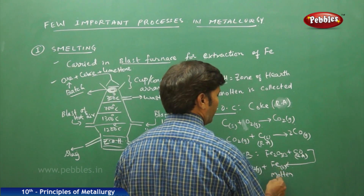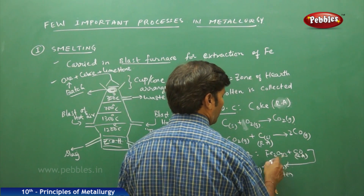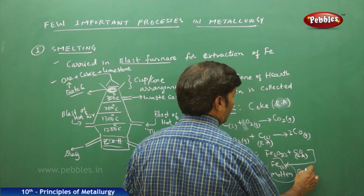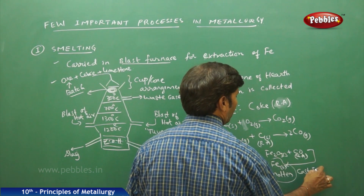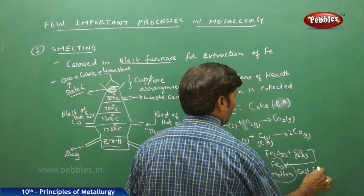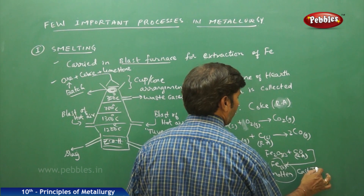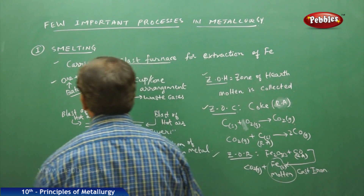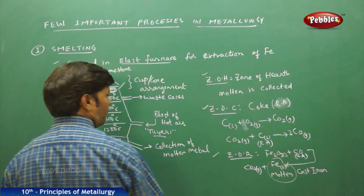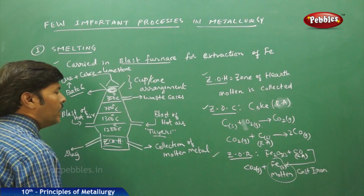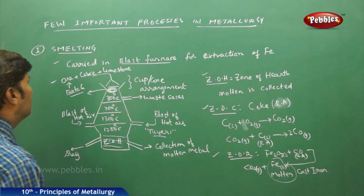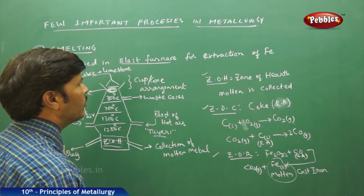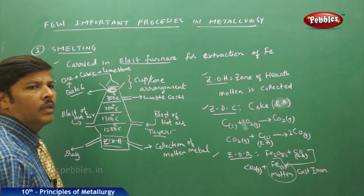The molten iron obtained still contains certain impurities, and is called cast iron. This cast iron is then converted to wrought iron in the next process. This entire smelting process is carried out exclusively for the extraction of iron.